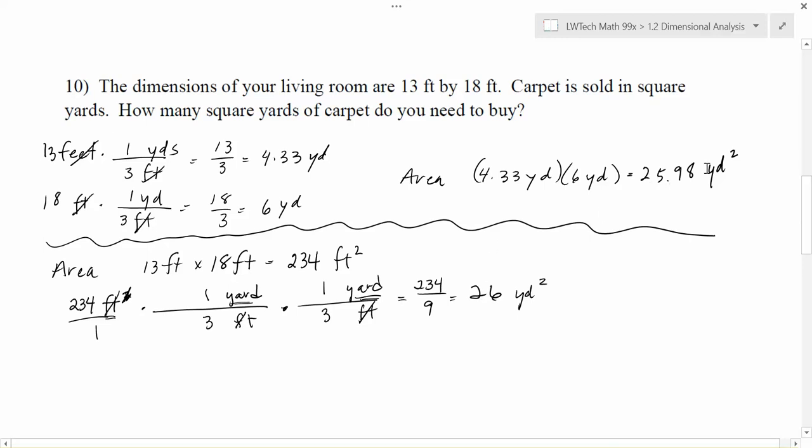Notice here I got 25.98. And here I got 26. And the reason for that discrepancy is that up here in this part of the problem, notice we got 4.33. I rounded that to two digits. So I lost a level of precision here. 26 square yards is actually the very best answer. And notice it's kind of within rounding values right there. So this is another example of a way that we could solve this problem.